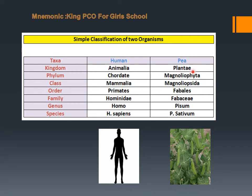For pea: kingdom Plantae, phylum Magnoliophyta, and class Magnoliophyta. Magnoliophyta are flowering plants. These plants have seeds that can be divided into two pieces — they are dicots.